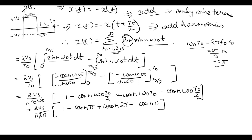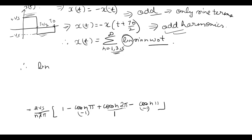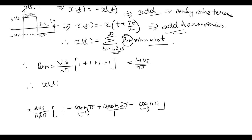The 2's cancel. cos(2nπ) is always 1. Since x(t) has odd harmonics, n is always odd, so cos(nπ) equals minus 1. Therefore bn equals Vs upon nπ times (1 plus 1 plus 1 plus 1), which equals 4Vs upon nπ. Therefore x(t) equals summation for n equal to 1, 3, 5 odd harmonics of 4Vs upon nπ sin(nω₀t). This is how you write this waveform in Fourier series.